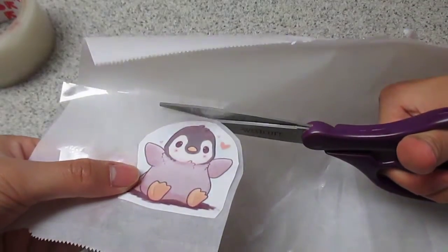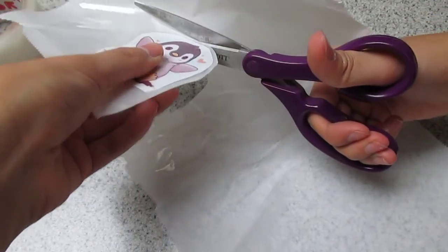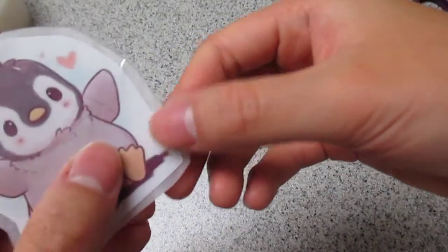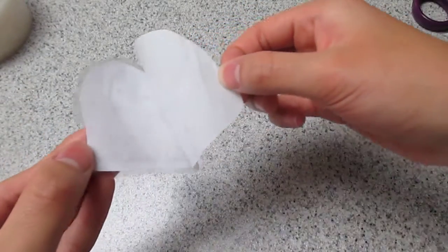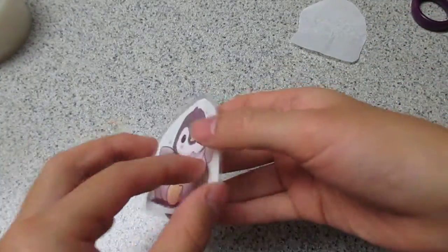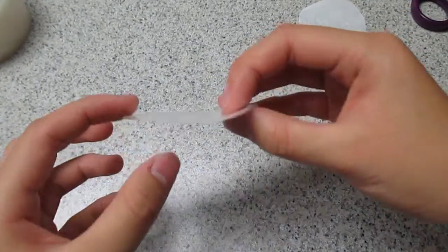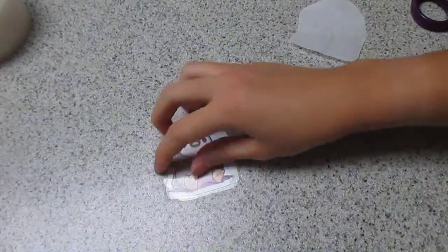Okay, so as you can see, I left a little outline. Just peel off the parchment paper. It's going to be super sticky, and then you can just stick it on something. It's also pretty thick, so it will stay on easily. And boom!